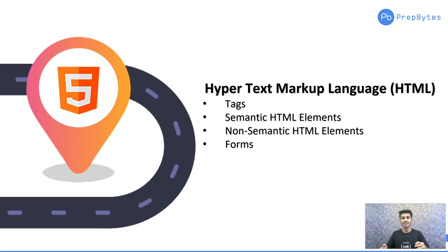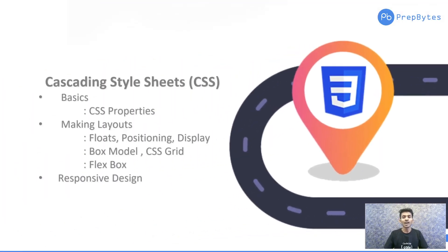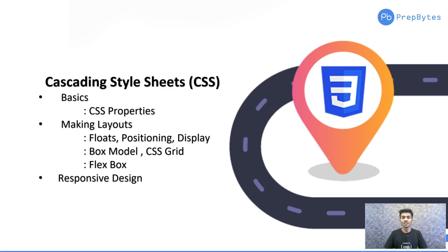If you're comfortable with HTML, you'll be able to add elements to that blank canvas of a web page. But that basic web page isn't very appealing — like a photo without any color. That's exactly where the second milestone comes in: CSS, or Cascading Style Sheets, which makes your website look more attractive.